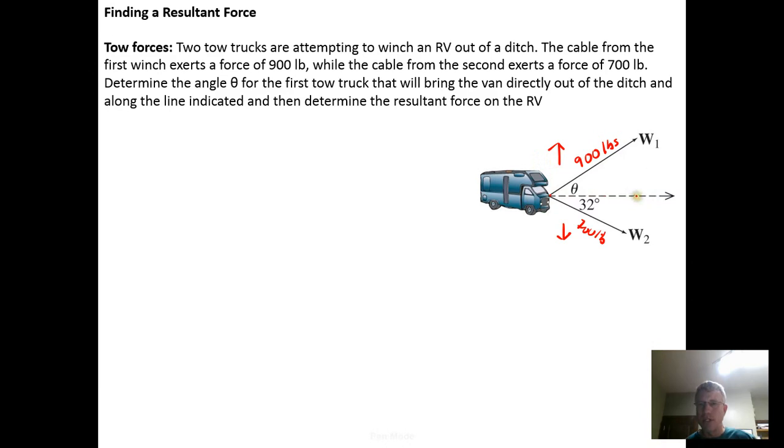We need this vertical component to cancel the vertical component from the other winch so that these add up to zero so that the only resultant force is in the horizontal direction.